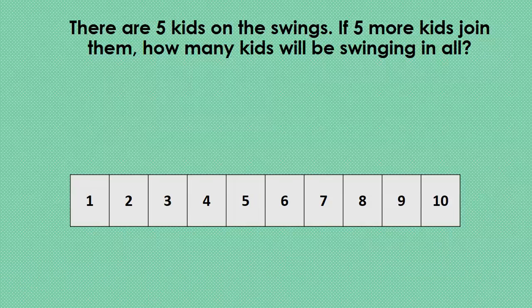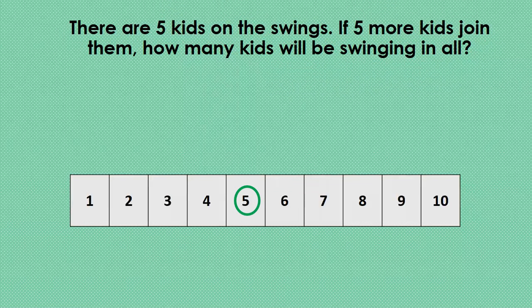We know there are five kids on the swings, so we are going to find the number five on the number path and start there. We know five more kids joined them on the swings, so we are going to count forward five.